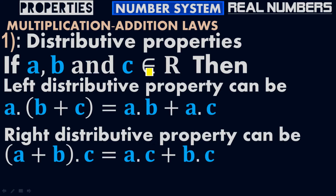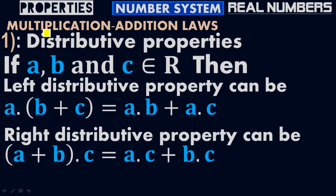If a, b, and c belong to real numbers, then according to the left distributive property: a times (b + c) equals a times b plus a times c. The left side equals the right side. Since it is a multiplicative addition law, it involves both multiplication and addition.